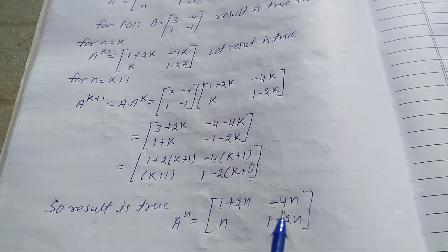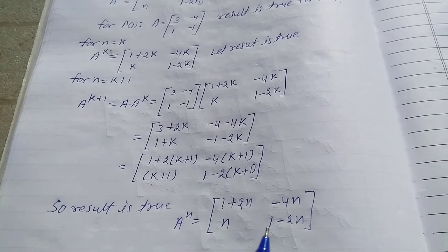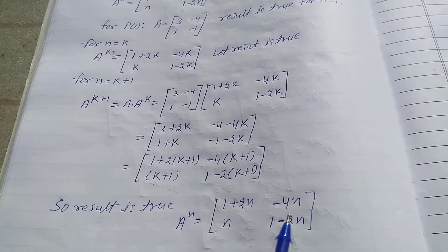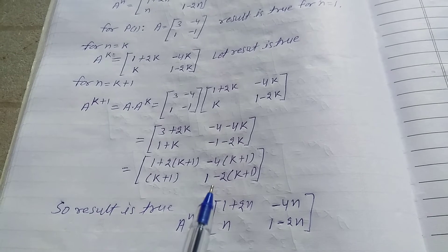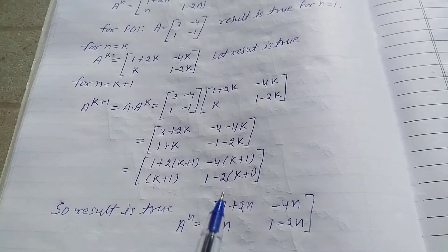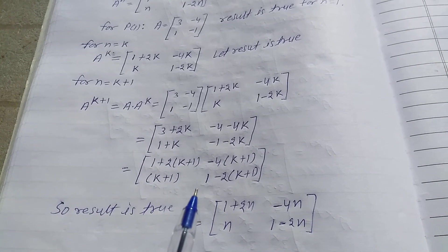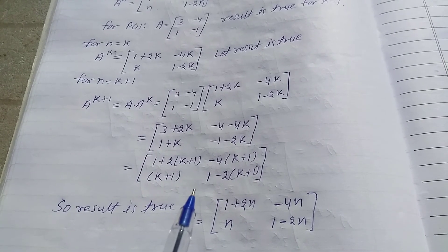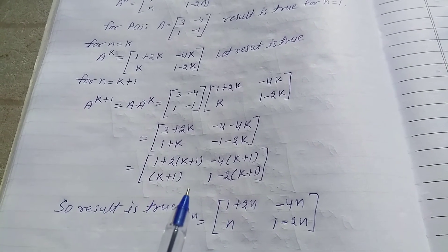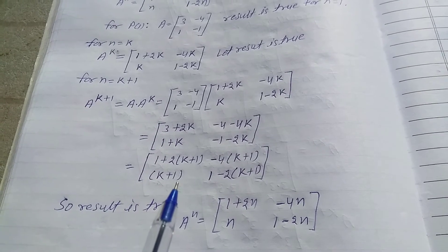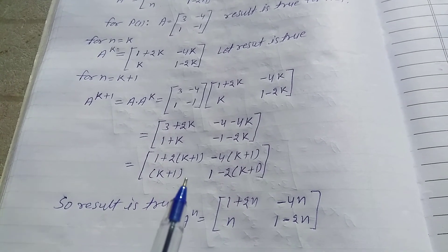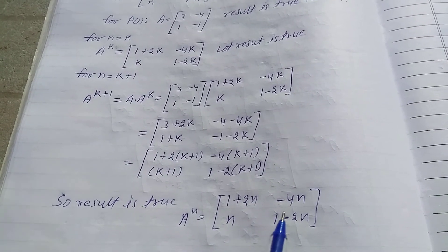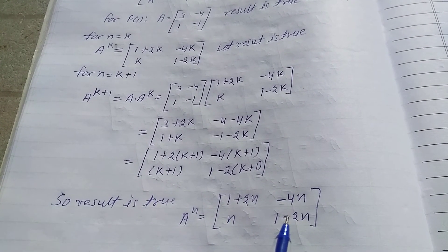Therefore, A power N is equal to matrix [[1+2N, -4N], [N, 1-2N]]. By the principle of mathematical induction, if the result is true for N=1, and assuming it is true for N=K implies it is true for N=K+1, then the solution is true for all positive integers N.